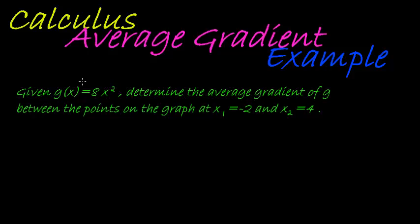So here we have an excellent example of an average gradient problem. They give us g(x) which is 8x squared, and they tell us to determine the average gradient of g between the points on the graph where x₁ is equal to negative 2 and x₂ is equal to 4.